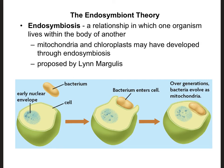Lynn Margulis proposes that an early kind of eukaryotic cell — one that was starting to get a nucleus but wasn't officially quite a eukaryote yet — engulfed a bacterium. Rather than just immediately breaking it down for energy, the cell realized that this bacterium was making ATP for it, and decided to keep it around. Over many generations, that bacterium eventually evolved into mitochondria. She thinks the same thing happened with chloroplasts, except that it was a cell that engulfed a bacterial cell that was making glucose for it, and so over many generations that became chloroplasts.